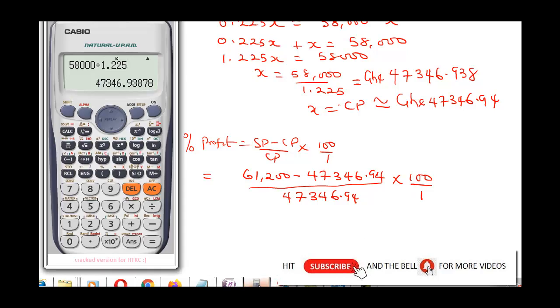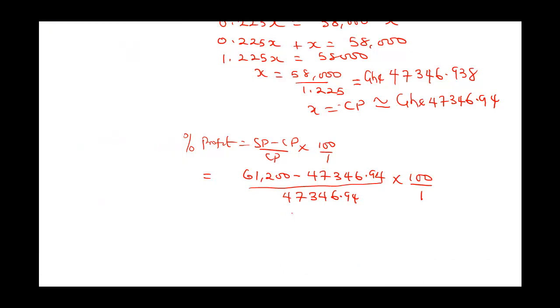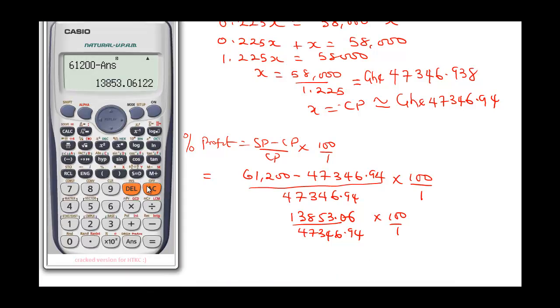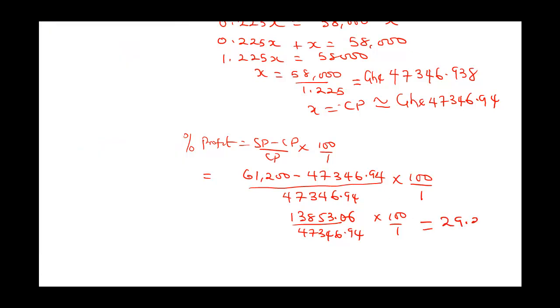Doing this in our calculator, this would be 61,200 minus answer. This would give us 13,853.06, all over 47,346.94 times 100 over 1. Remember, the question says we should find the percentage in 2 decimal points. So this will be divided by 47,346.94, times 100. This is going to give us 29.258.